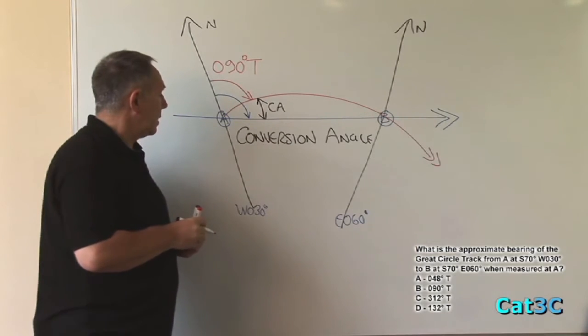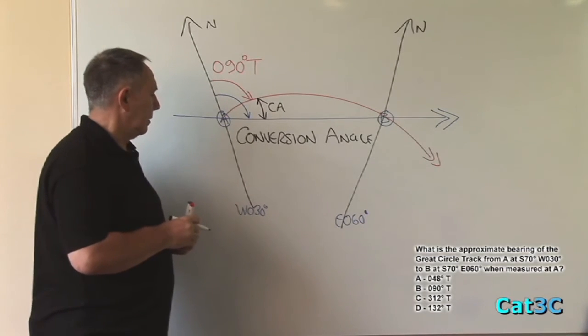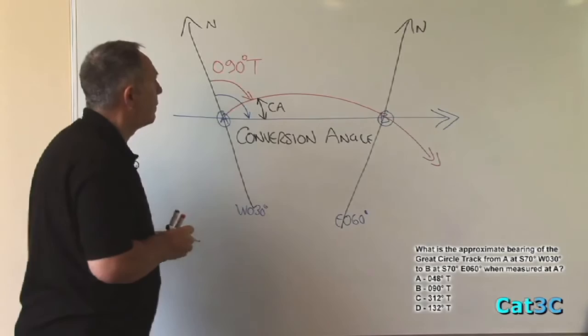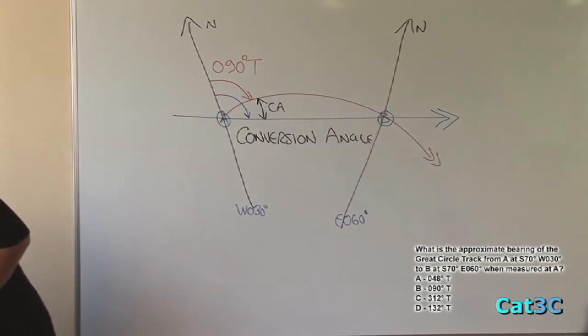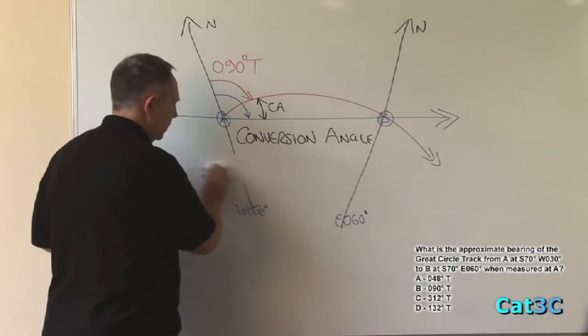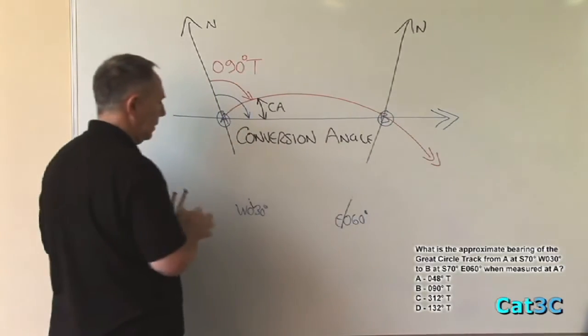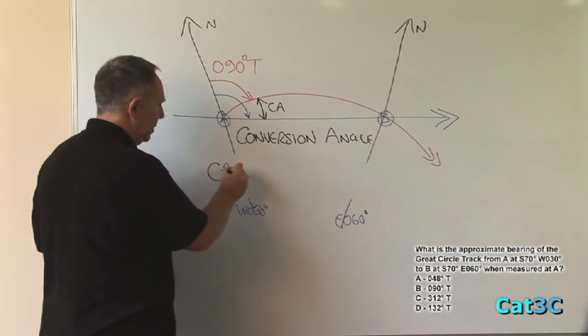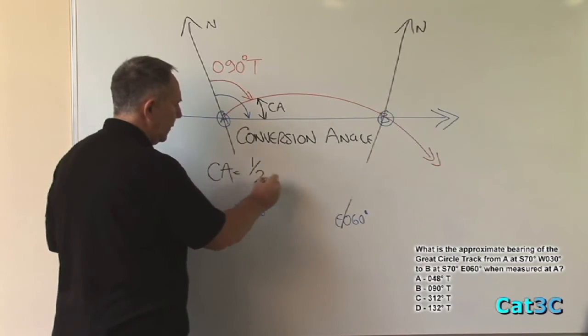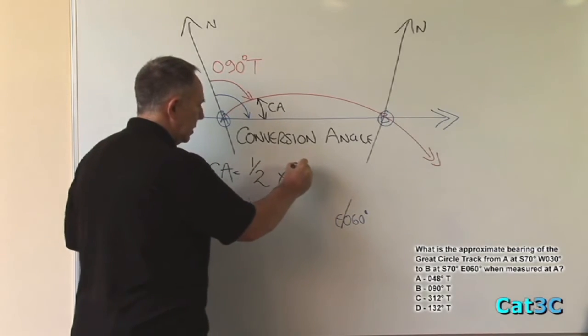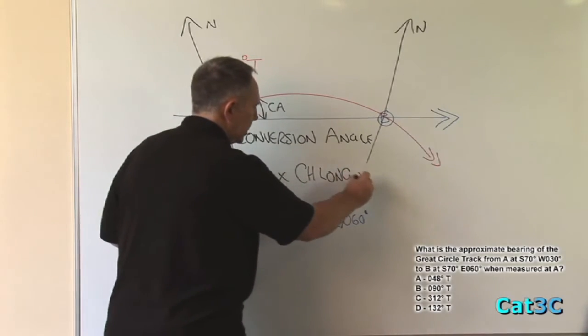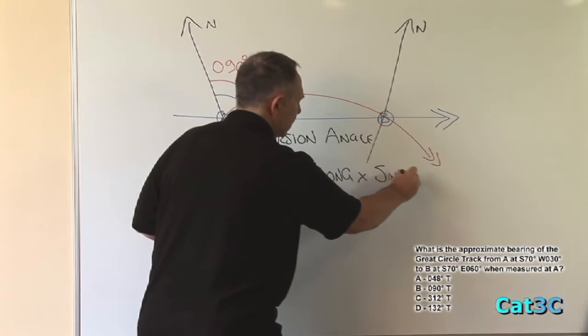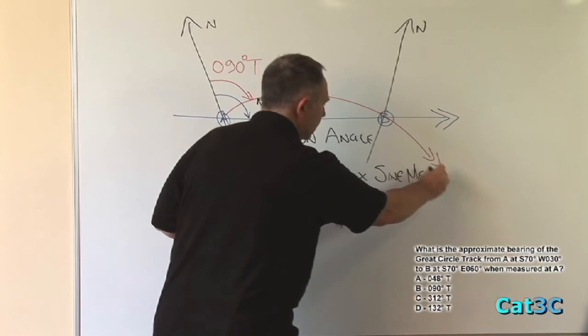How do we calculate that value of conversion angle? Very simply, from applying a formula which says that conversion angle is equal to half times change of longitude times the sine of the mean latitude.